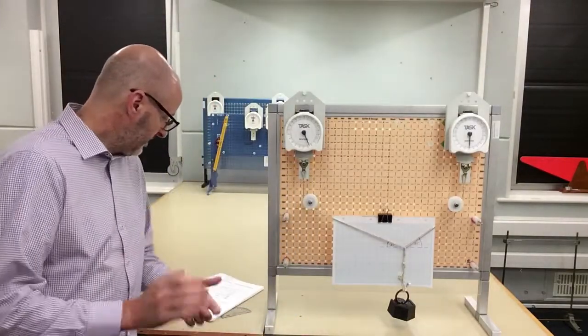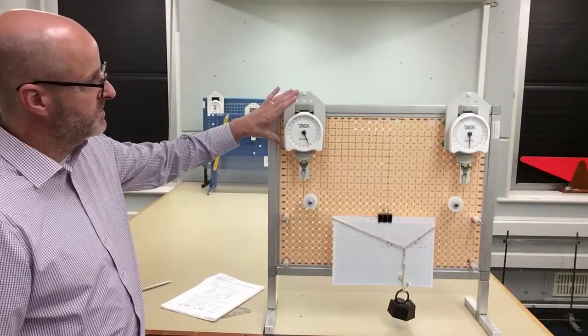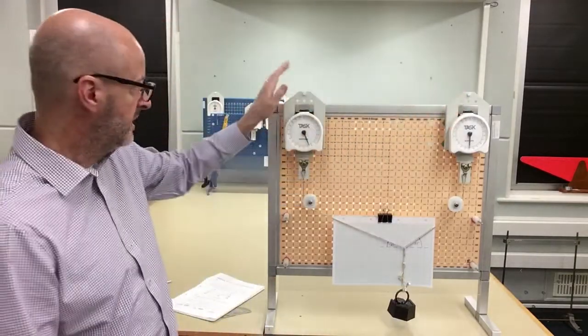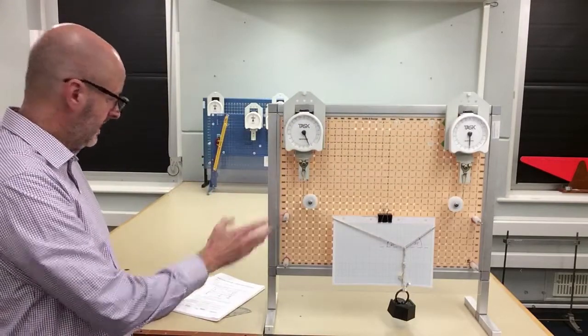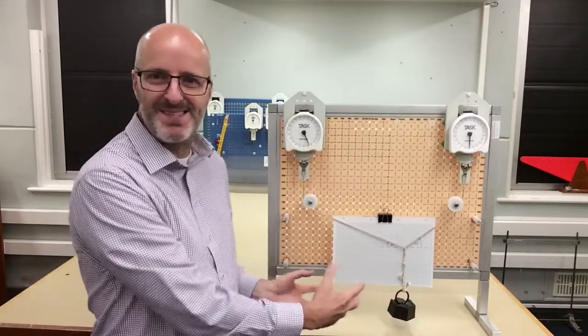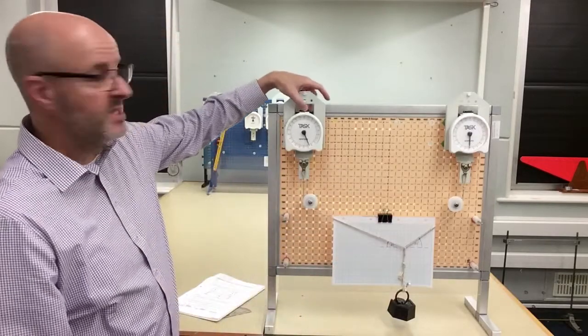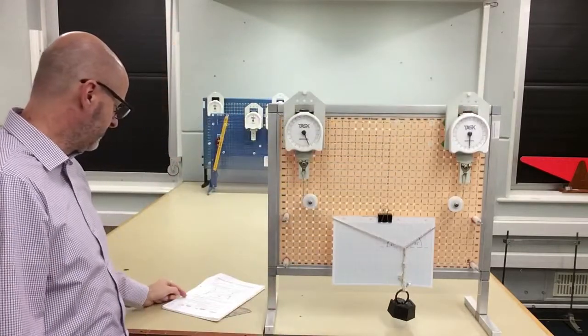Okay, so page 17, procedure step 1: ensure that the load cells, that's these two devices here, are in position. I've already done that. Step 2: set the load cells to zero. Now before I placed our mass in this system I'd already zeroed these load cells. So that's already done for you.